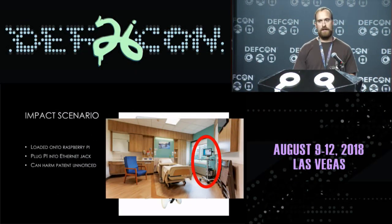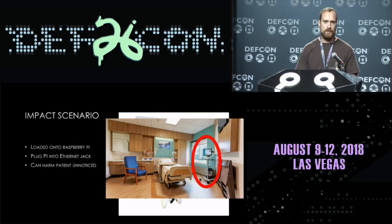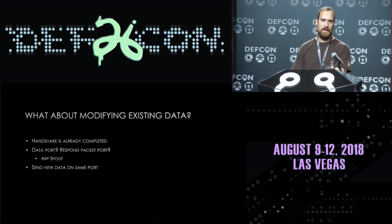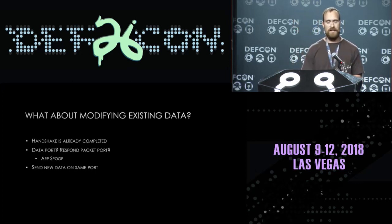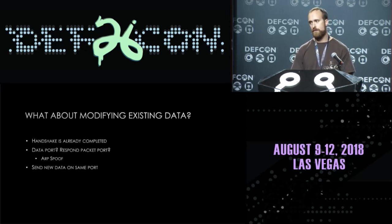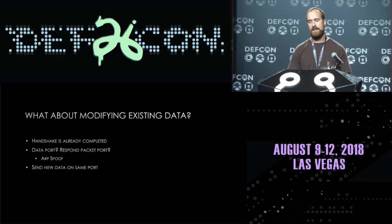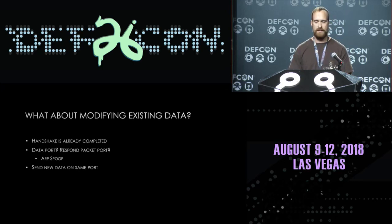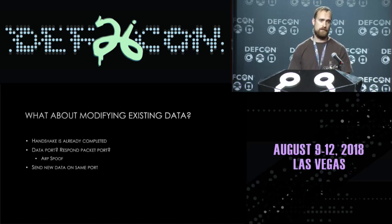I showed this to Dr. Nordic and he was unimpressed — there's not a whole lot of medical implication here. He got me back on track: he wanted me to modify data in real time on the network. How can we take what we learned and actually do that? It's actually simpler than emulation — with emulation we had to account for all the crazy handshake stuff. The handshake is already completed at this point. What we do have to do is figure out the port numbers utilized in that handshake. And the simplest way to do that would be an ARP spoof attack.